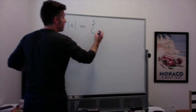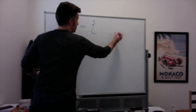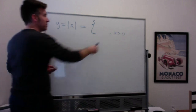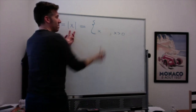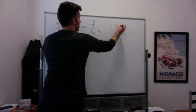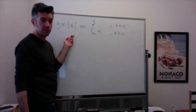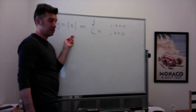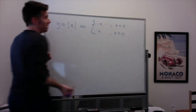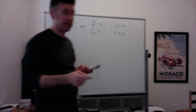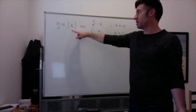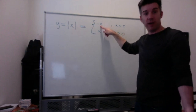The absolute value function: the absolute value takes whatever you give it and returns the corresponding positive value. If you give it six, you get six back; if you give it negative six, you get six back. If x is already positive, the absolute value of x equals x. If x is negative, the absolute value of x equals negative x — negating the negative number makes it positive.